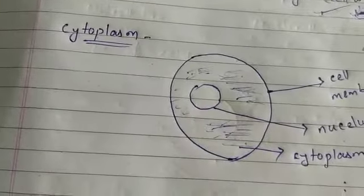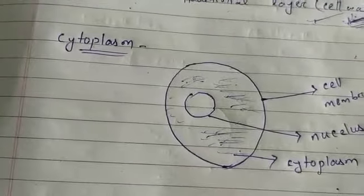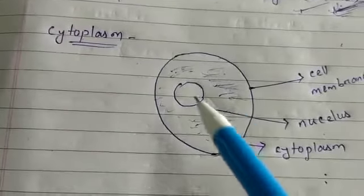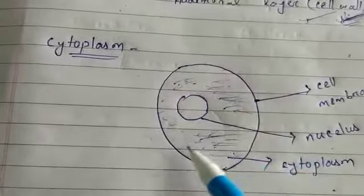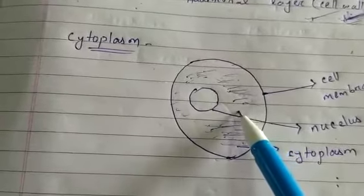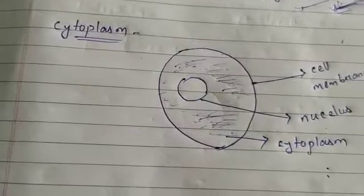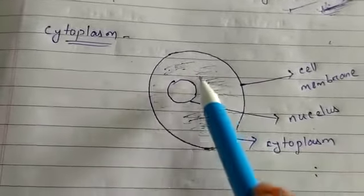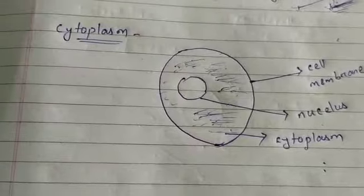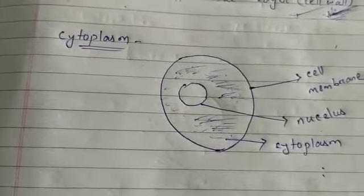Many important functions of the cell take place in the cytoplasm because all the cell organelles — like mitochondria, Golgi body, vacuoles, ribosomes — are present suspended in the cytoplasm. So many important functions of the cell take place in the cytoplasm.